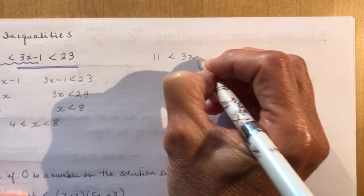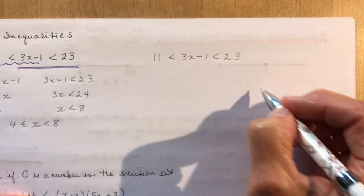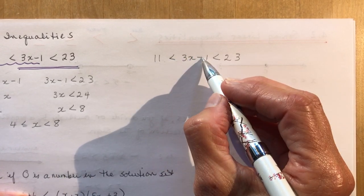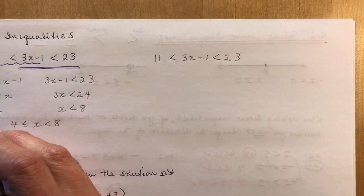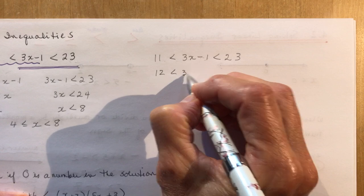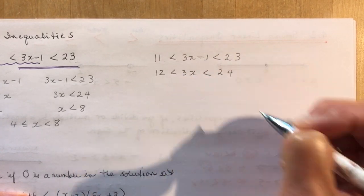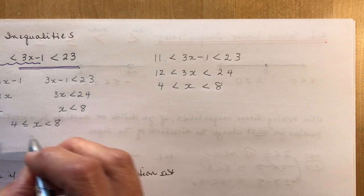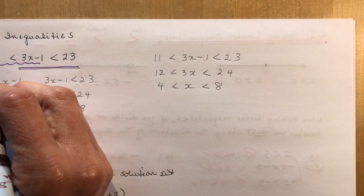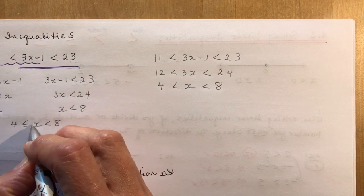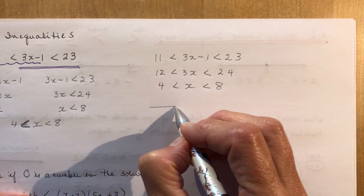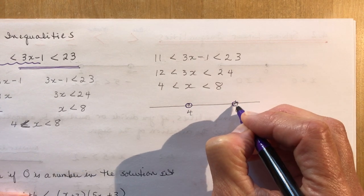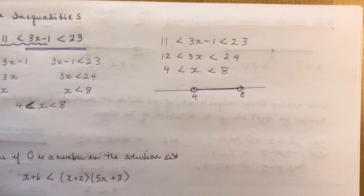You can also keep the double inequality as one expression, but when it's more complex you might make mistakes. Whatever operation you perform, you must do to all three parts. For instance, add 1 to all parts, then divide all by 3. On the number line, place 4 and 8 with open circles and join them — there's your solution for the double inequality.